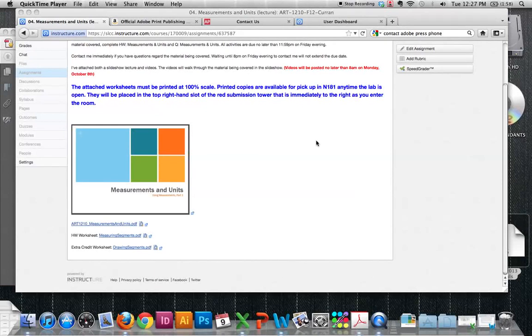Our next lecture is on measurements and units. It's basically how to use a ruler to ensure that you have proper measurements. We will use this again later in the semester when we create die lines, so keep that in mind.